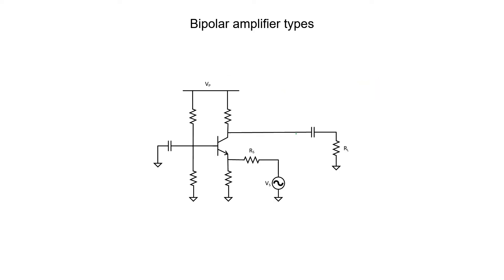Because we have three terminals, we have one more way to wire up an amplifier. In this case, our source is attached to our emitter and our load is attached to our collector. Our base is attached to ground through a capacitor, so the base is grounded as far as AC signals are concerned. For DC signals, we'll have a particular DC voltage present at the base, which is a function of the voltage divider made by the two resistors. Because the base is not attached to either the source or the load, we call this a common base amplifier.